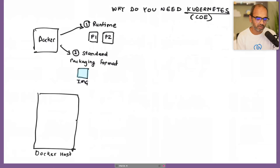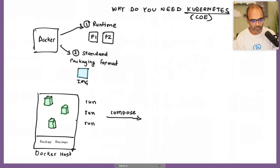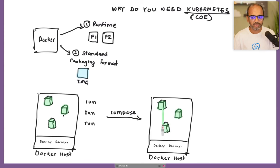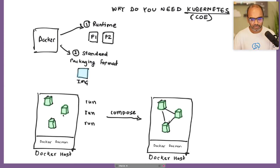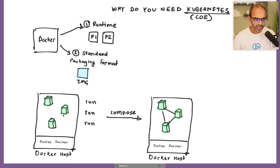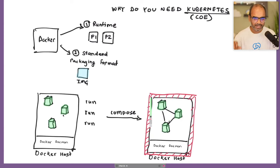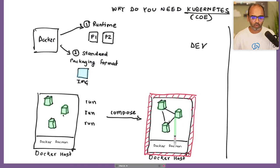With Docker, you can use docker run for a single container or docker compose to run a stack of multiple services together — it handles interconnection, service discovery, and management of that entire stack. However, whether you use Docker or Docker Compose, you are limited to one single node. That is the key limitation you want to break out of.